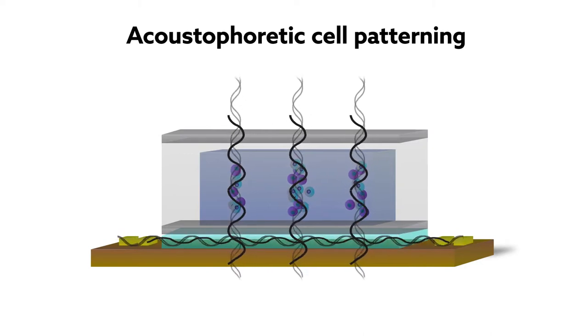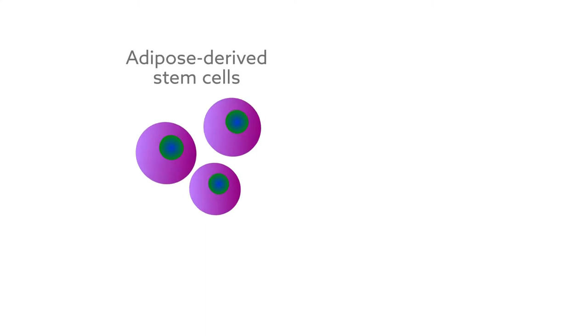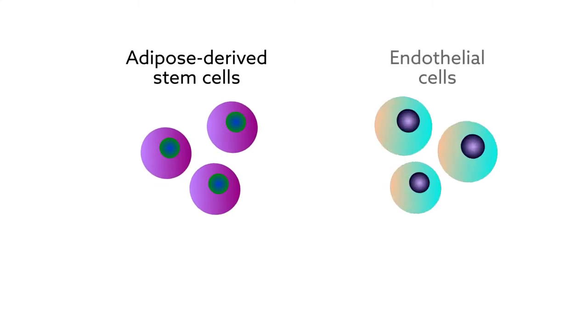In a new report in Nature Communications, researchers used the technique to replicate the microvessel structure found in skeletal muscle. To accomplish this, they combined human adipose-derived stem cells and endothelial cells with a biocompatible hydrogel.